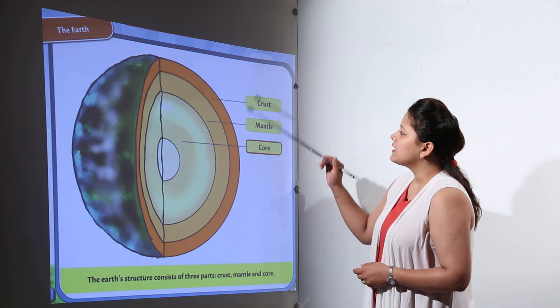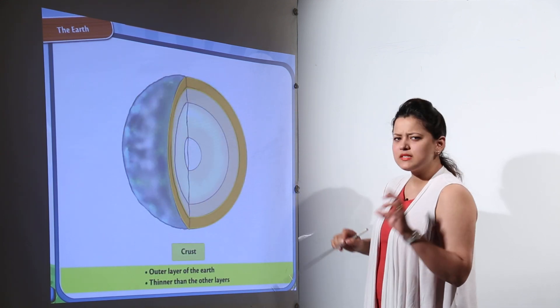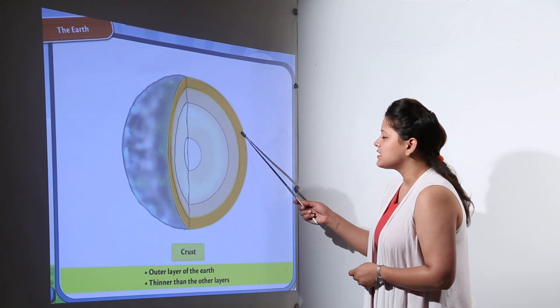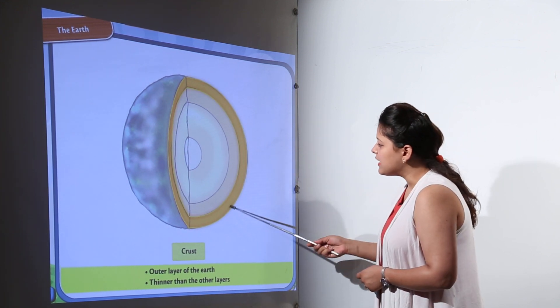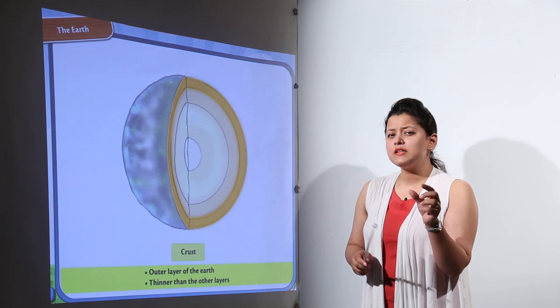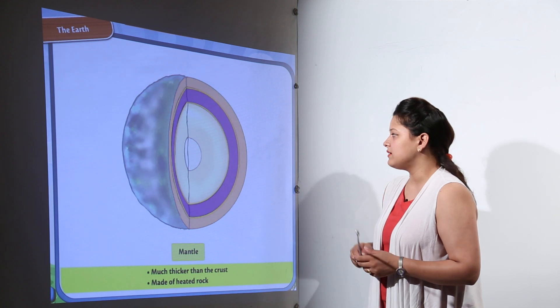Here we can see that the outermost layer is a little different than the others. That is the crust. Now this is the outermost layer of the Earth as we can see, and it is comparatively very thin as compared to the other layers.